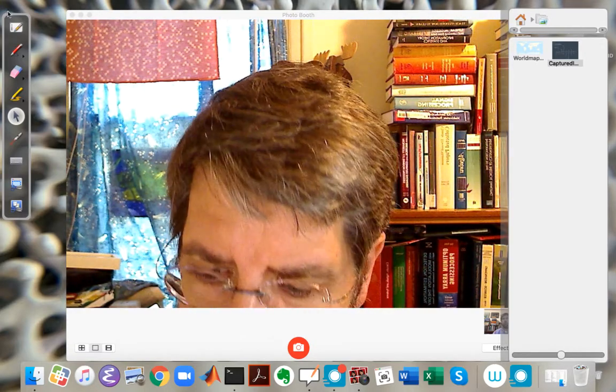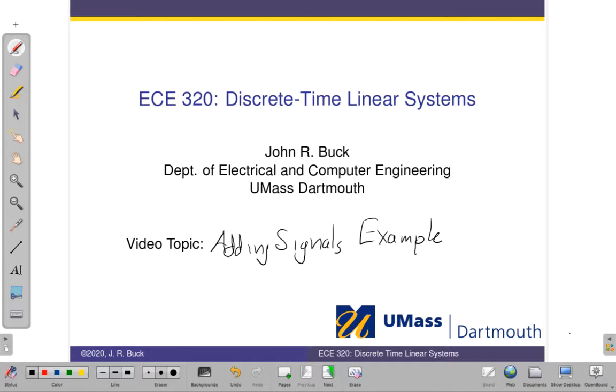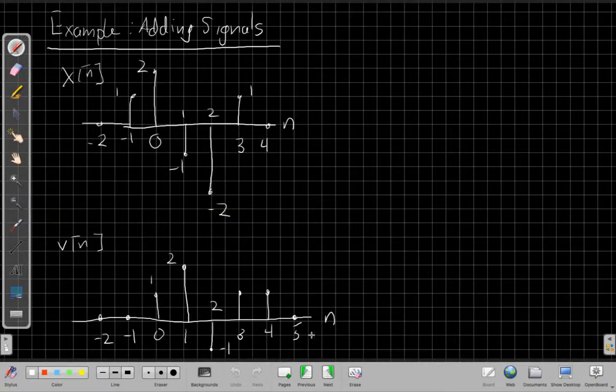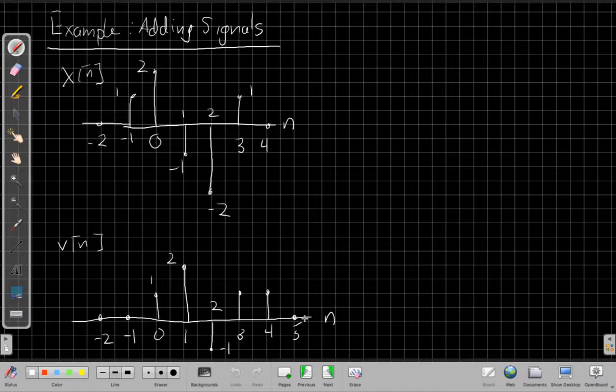So let's get the whiteboard up so we can see, again, today's topic, adding signals. And let's go to this page. I already have two sample signals drawn here. The x of n is one we've seen already in a few of these videos. This video assumes you've seen the basic operations on signals video. If you haven't already seen that, you should go take a look at that one and come back here.